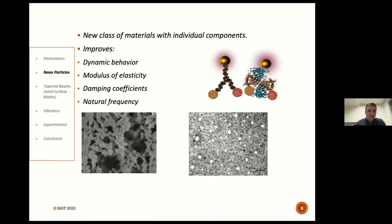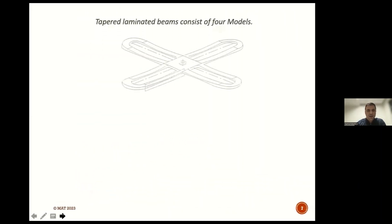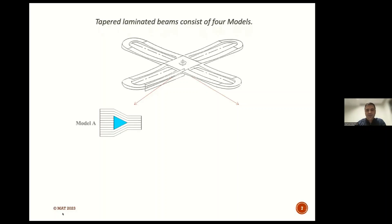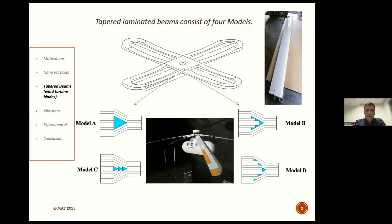In order to improve the dynamic behavior of wind turbine blades or tapered structures, we can use two methods. The first one is by using nanoparticles to improve the dynamic behavior. The second one is by using different tapered composite structures.